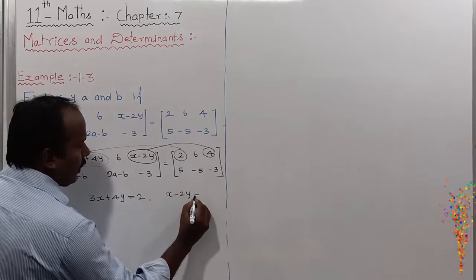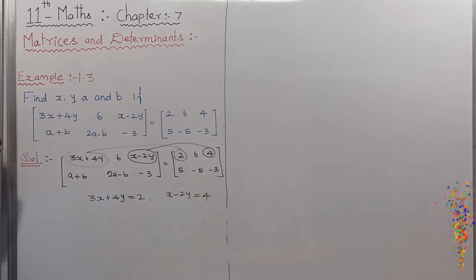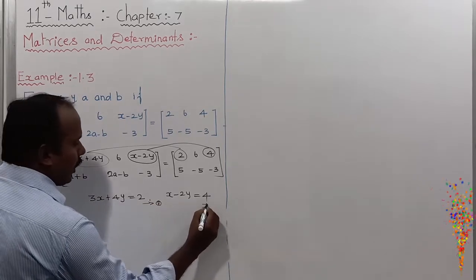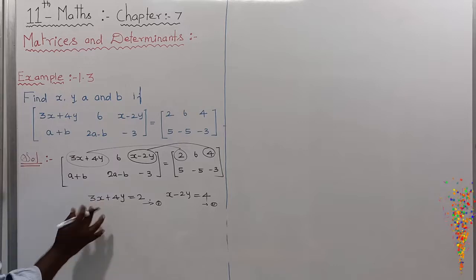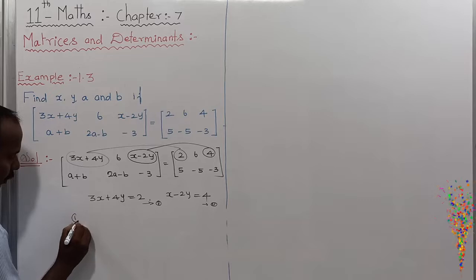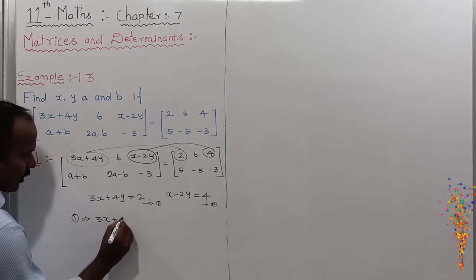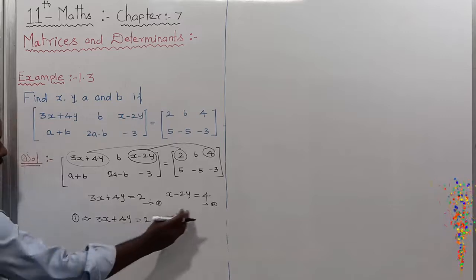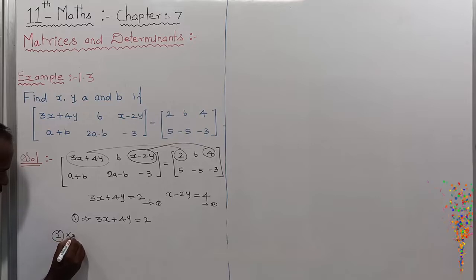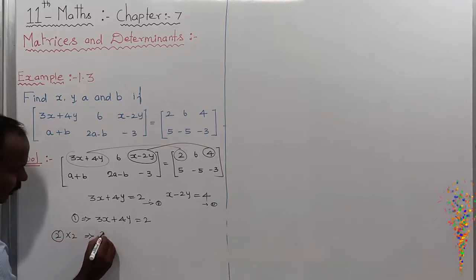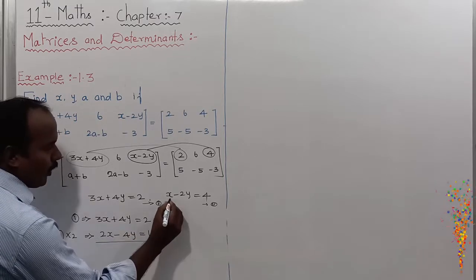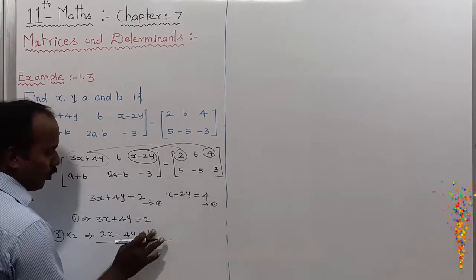X minus 2Y is equal to 4. This is the second equation. To find out the X value: equation number 1 has no changes — 3X plus 4Y equals 2. Equation number 2 multiplied by 2 gives: 2X minus 4Y is equal to 8.